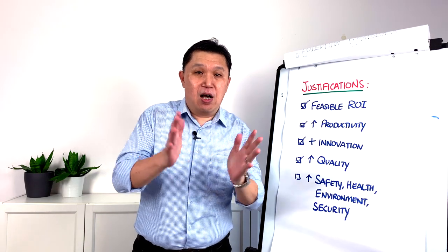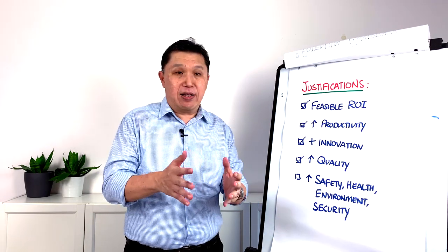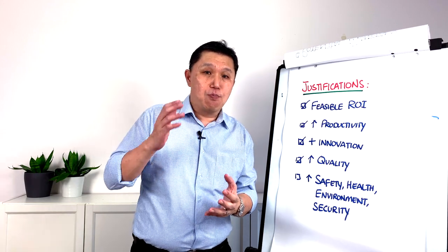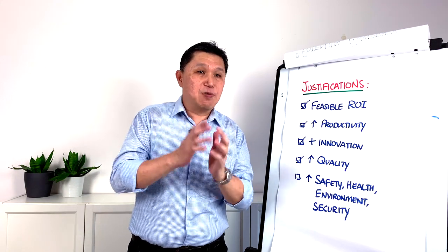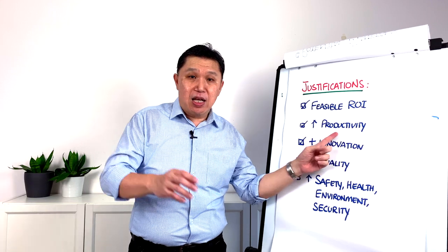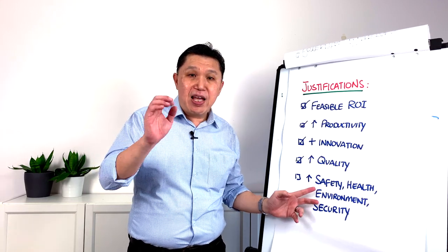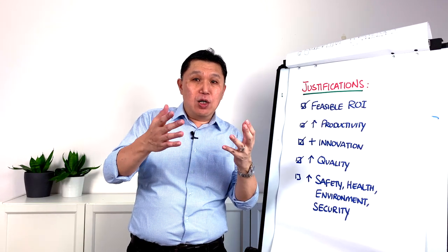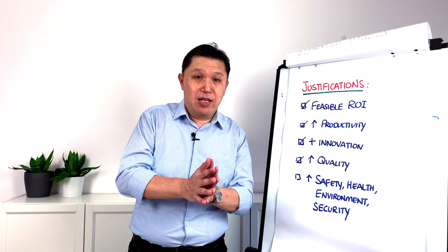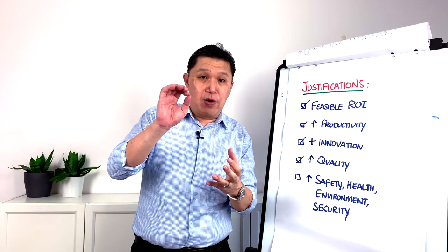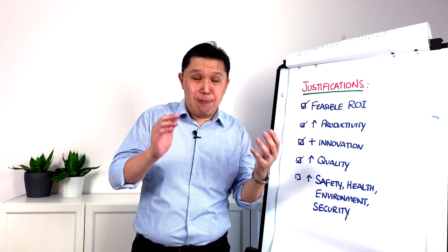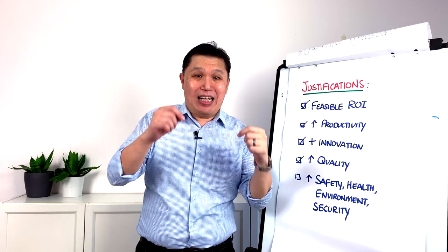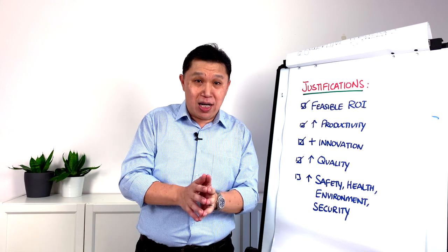Your justification has to demonstrate how feasible that particular facilities improvement initiative is that you are going to propose. It has to speak the language of increasing productivity, innovation, quality, safety, health, environment, and security. Review carefully so that when you propose to your management, it is understood that it is feasible to be implemented — and that is how you win funds for FM, adding value and business advantage to your organization.